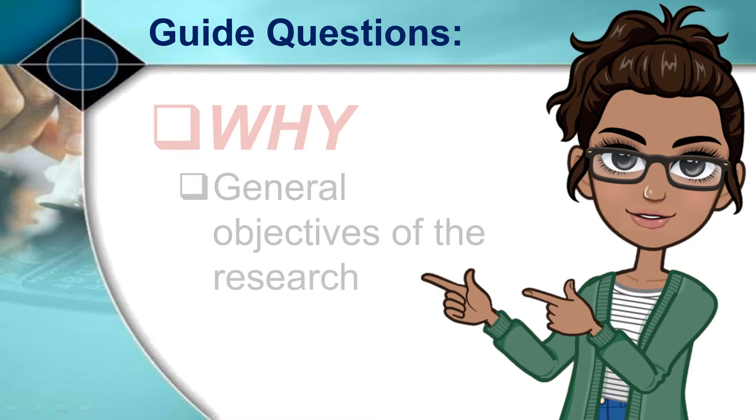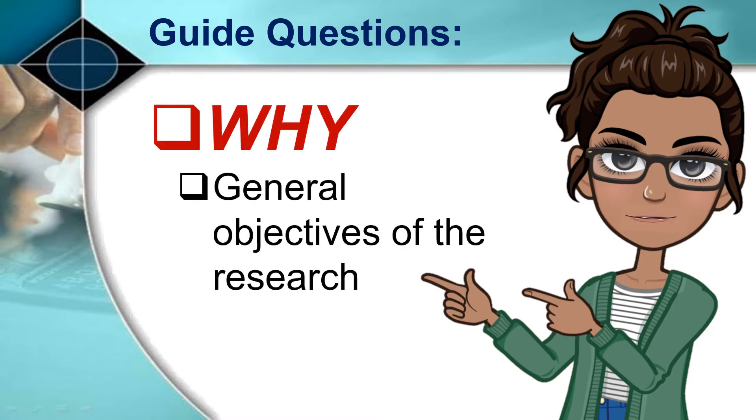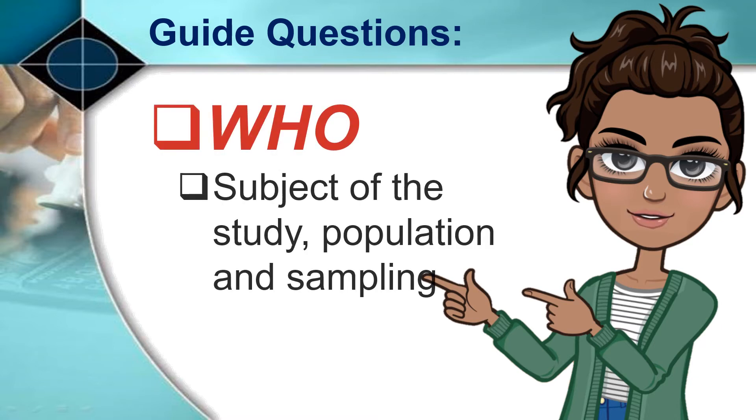Four: Why? The general objectives of the research. Five: Who? The subject of the study, the population and sampling.